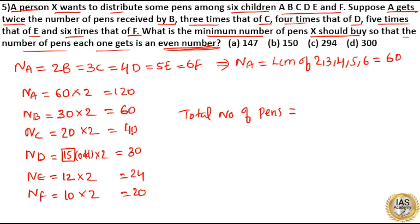120 plus 60, 180 plus 40, 220, 220 plus 30, 250, 250 plus 24, 274 plus 20, 294. So option C is your answer.